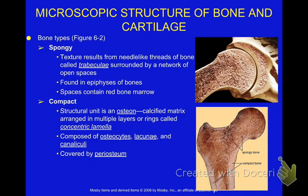Spongy bone gives strength to the bone without adding extra weight. If all of our bone was compact bone, it would just be too heavy for us to move around. So we have spongy bone at the ends of bones — it's still very, very strong and hard, but not as heavy as if our bone was all compact bone. In the trabeculae — the spaces — that's where we have our red marrow.